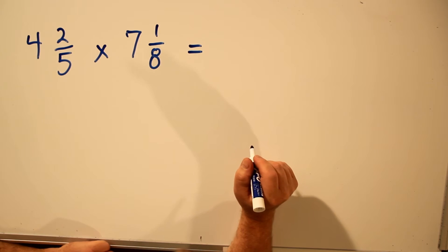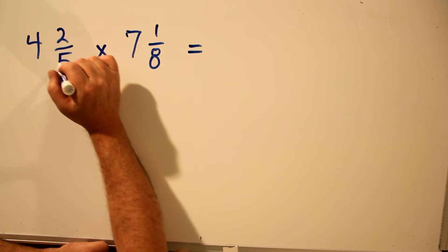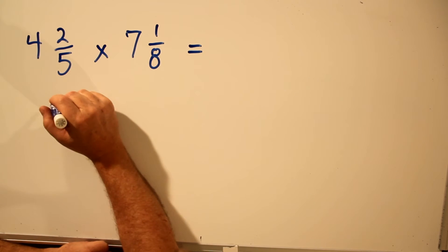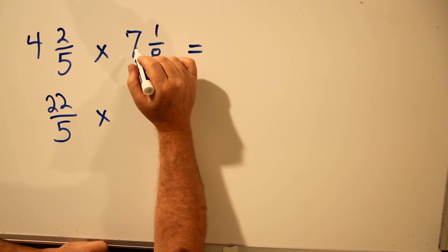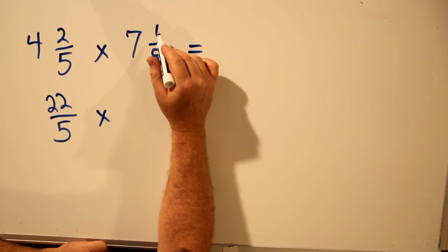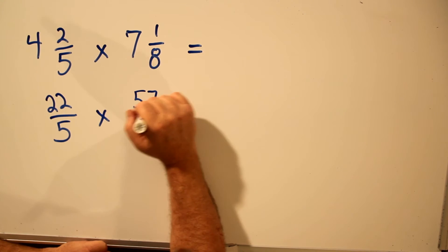How do we do that? Convert both to improper fractions. 4 times 5 is 20, plus 2 is 22. Top number. Keep the bottom number the same. Over here we have 7 times 8 is 56, plus 1 is 57. Keep the bottom number the same.